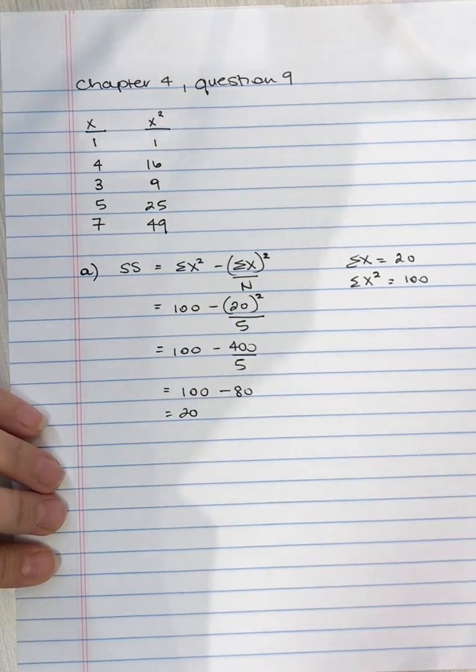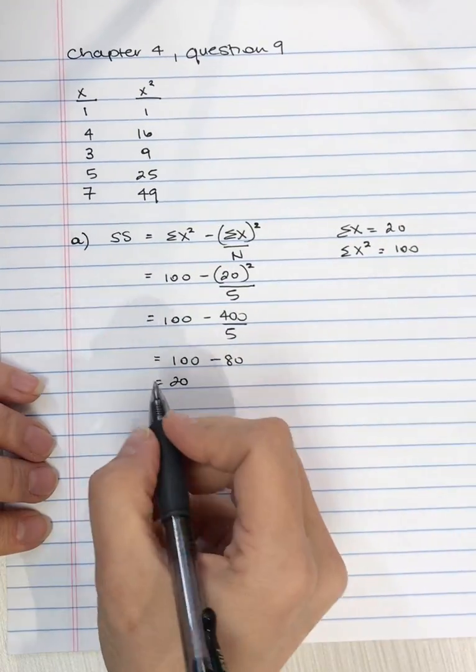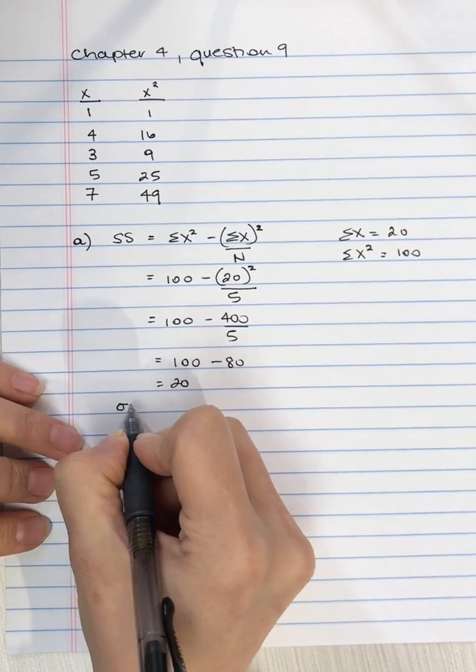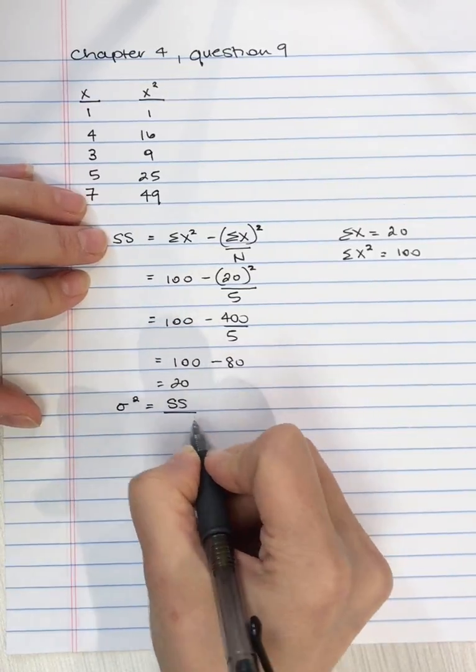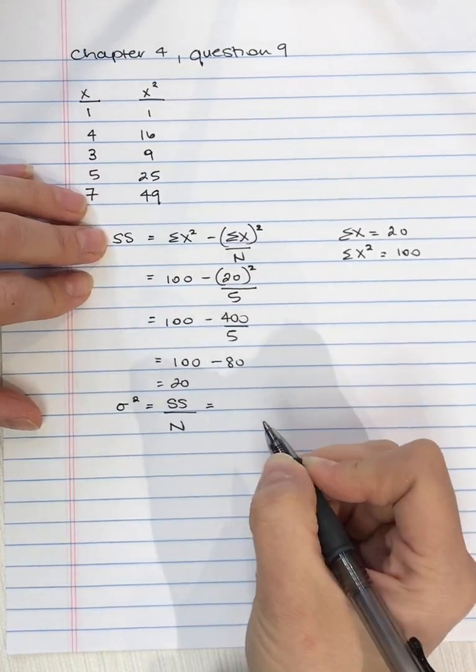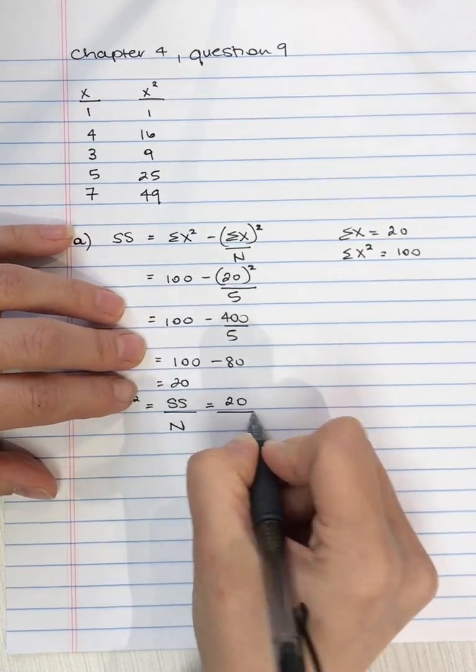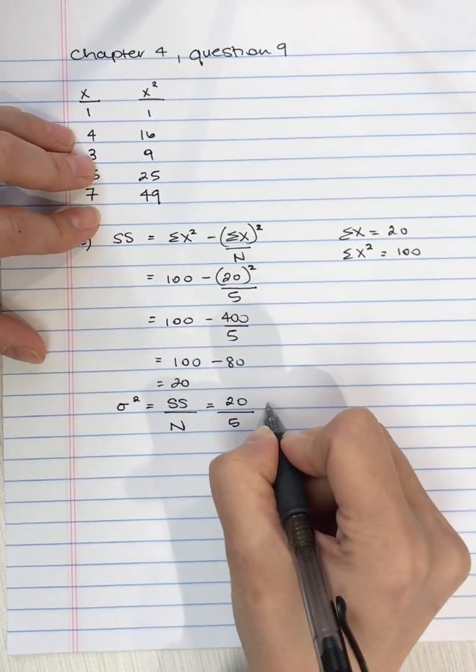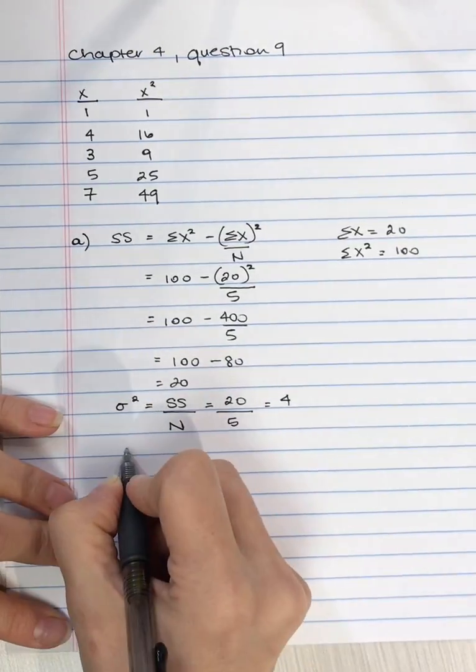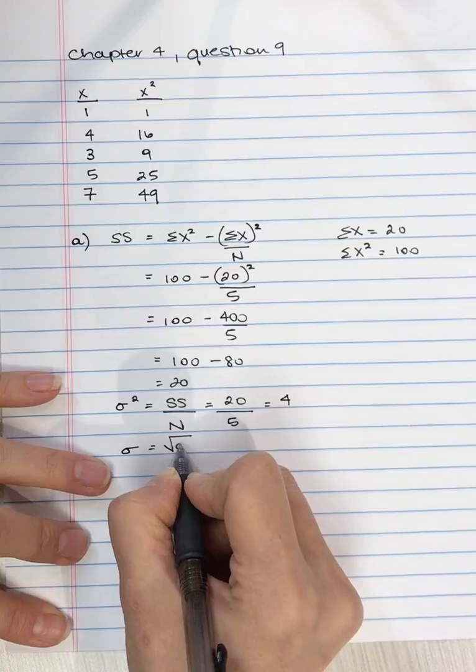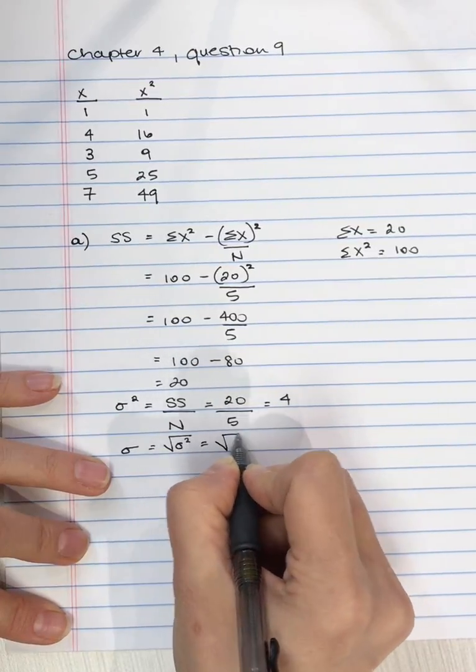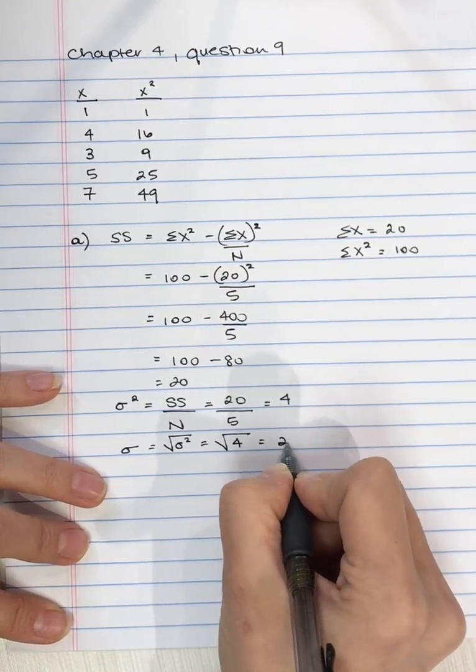But the question asks us, what is the variance in standard deviation? So to calculate the variance of a population, what we're going to do is take that sum of squares and divide by big N. So we're going to take 20, and we're going to divide by 5, and that's 4. The standard deviation is the square root of the variance, so the square root of 4, and it's equal to 2.